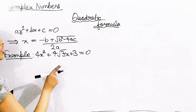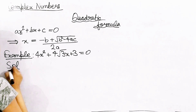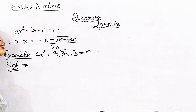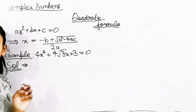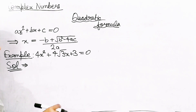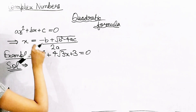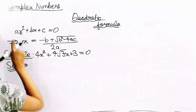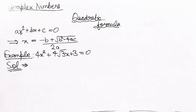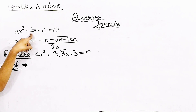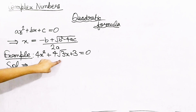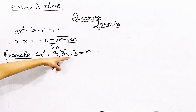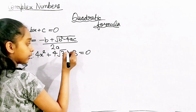This is clear to us. Now the next step is solving it using the quadratic formula. First let's identify the values. On comparing this equation with ax² + bx + c = 0, we get: a = 4, b = 4√3, and c = 3.